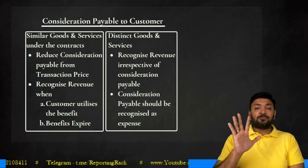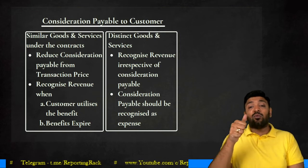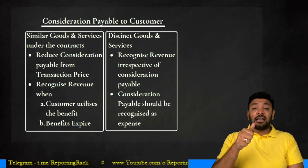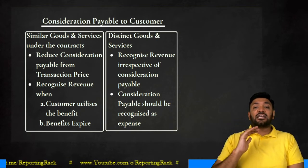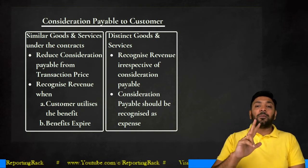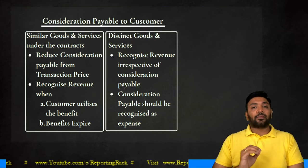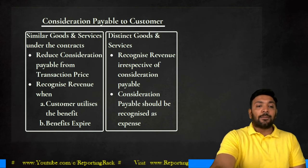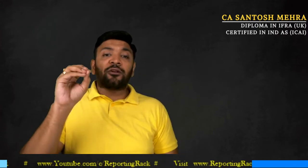Out of the total five steps, I have completed three: step one — identification of contract; step two — identification of performance obligations under the contract; step three — determination of transaction price. Now I come to step four.